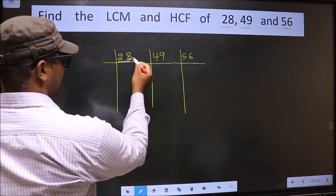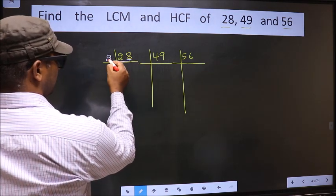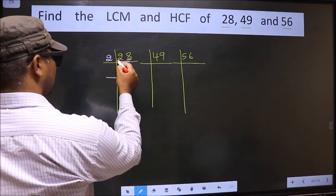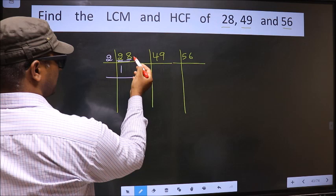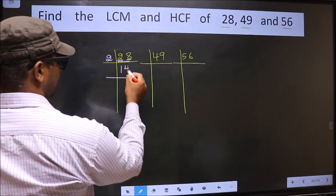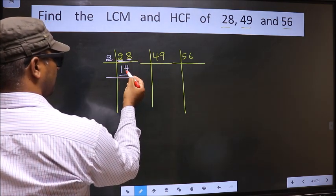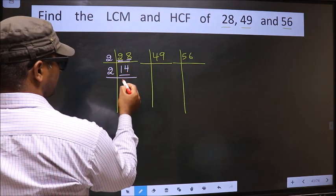Here the last digit 8, is even, so we take 2 here. The first number 2, when do we get 2 in 2 table? 2 times 1 is 2. The other number 8, when do we get 8 in 2 table? 2 times 4 is 8. Now here we have 14, 14 is 2 times 7 is 14.